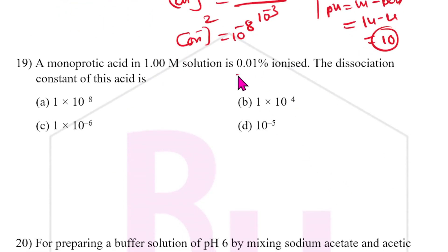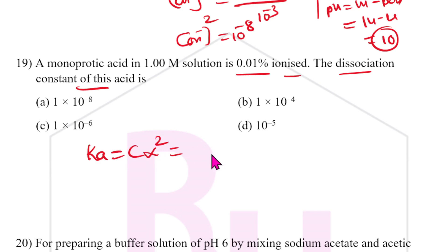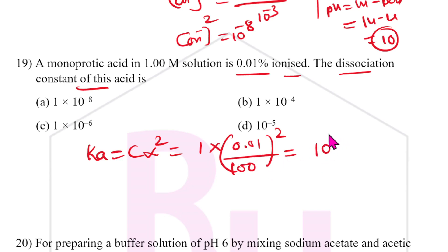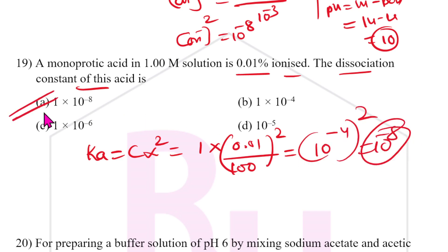Nineteenth question: a monoprotic acid in 1 M solution is 0.01% ionized. Ka = c × α² = 1 × (0.01/100)² = (10⁻⁴)² = 10⁻⁸. The answer is A.